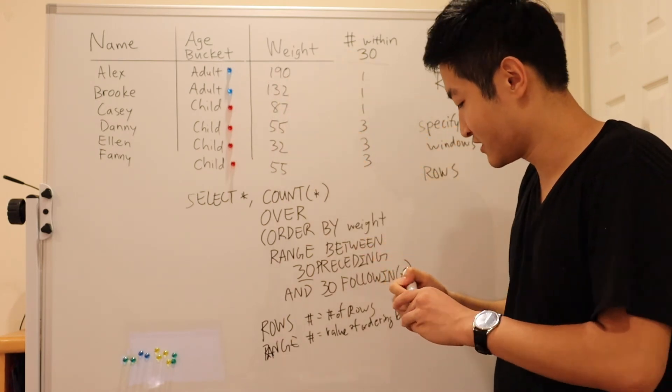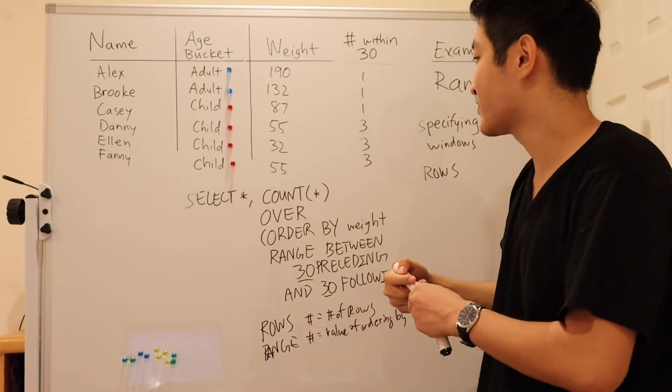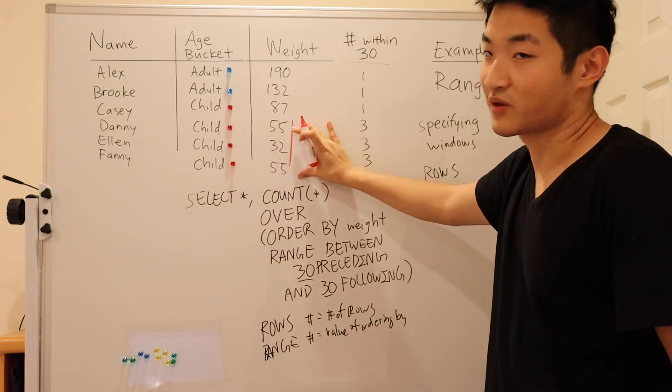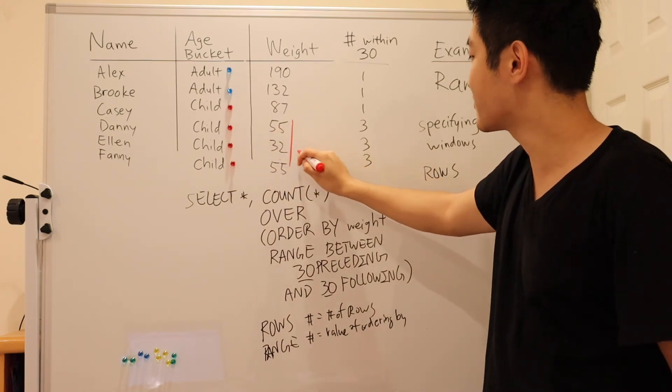And again, to illustrate here, the window for Ellen will end up encompassing these three rows, but it's the range from 2 to 62.